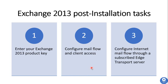In the third post-installation step, we configure internet mail flow through a subscribed Edge Transport Server. To establish internet mail through an Edge Transport Server, subscribe the Edge Transport Server to an Active Directory site, which will automatically create two send connectors required for internet email flow. If you do not want to subscribe the Edge Transport Server to the Active Directory site, you can create the send connector manually to establish mail flow between your Mailbox Server role and the Edge Transport Server role.